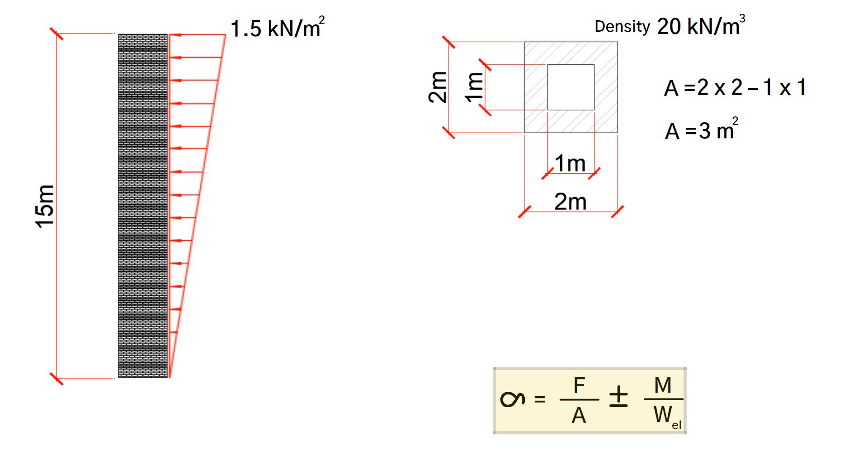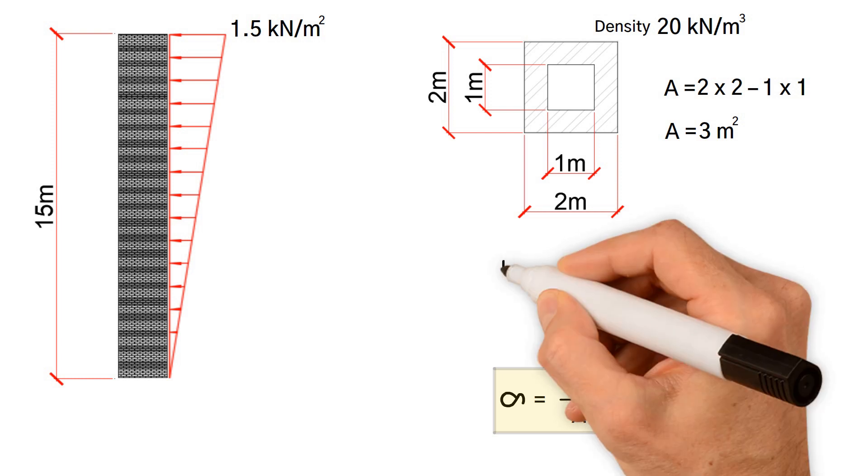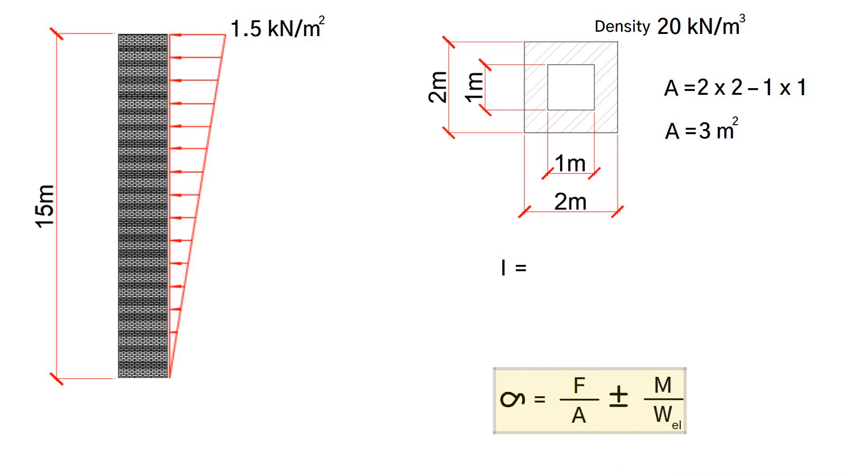We also need to calculate the elastic modulus. But first we must determine the area moment of inertia, which is equal to width times depth cubed divided by 12 for a rectangular section. Again, we must deduct the area moment of inertia of internal from the external square.